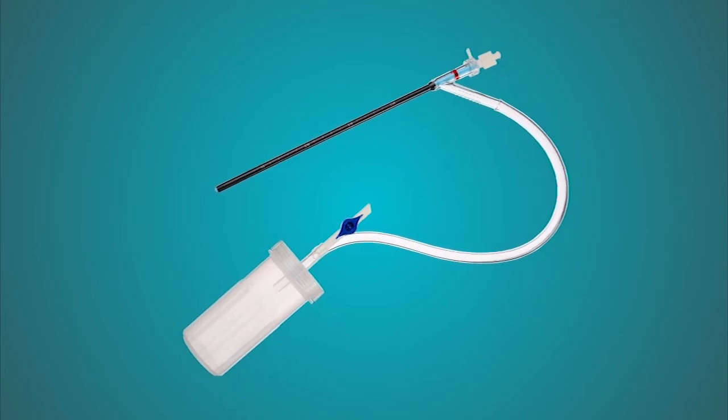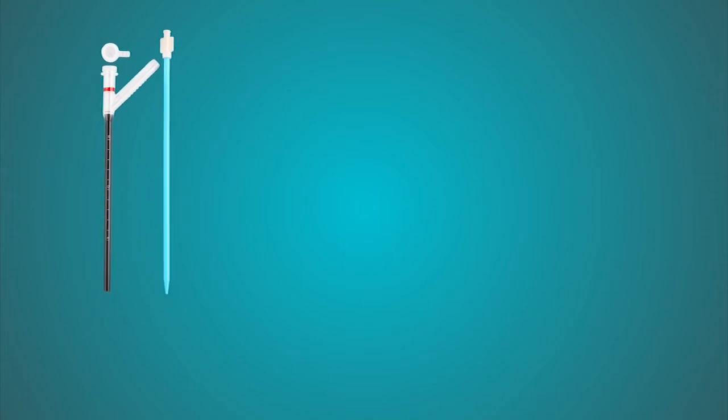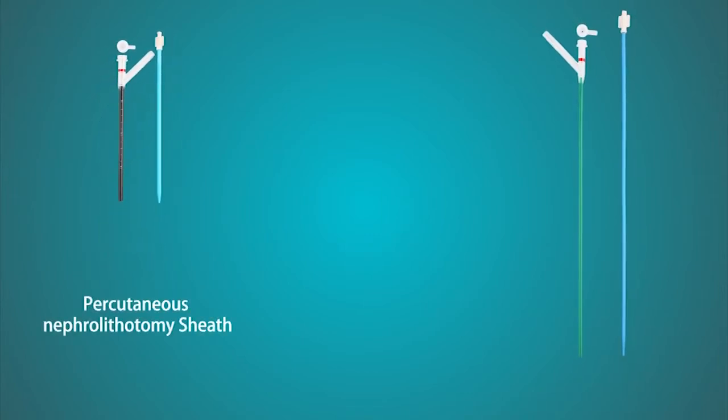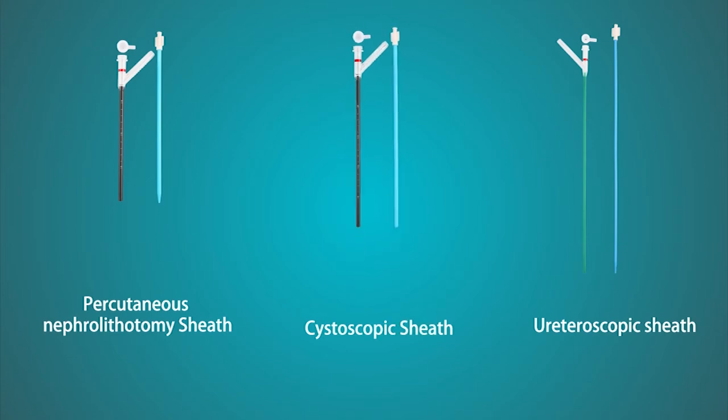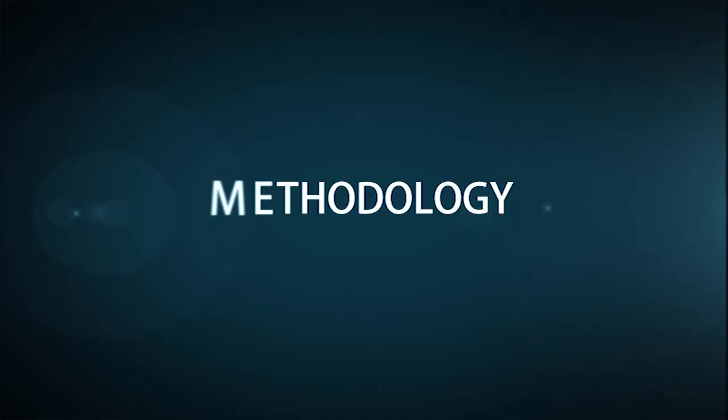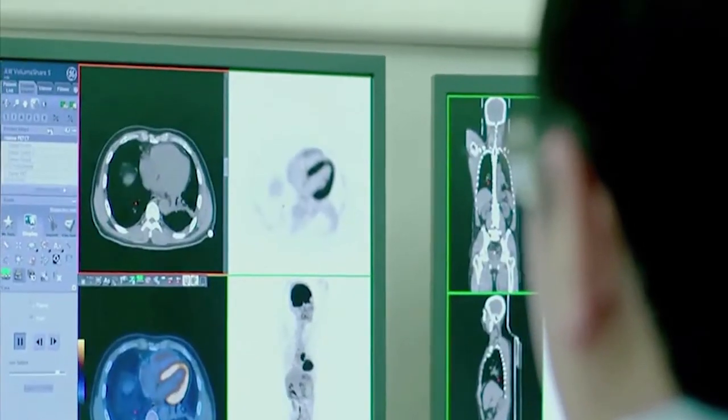Connect the oblique branch of the access sheath to the stone collection bottle using clear and flexible tubing. Our product line includes the percutaneous access sheath, the ureteral access sheaths for the kidney and ureter, and the cystoscopic access sheath. After routine preoperative preparation, select the appropriate sheath according to the stone location and surgical technique.